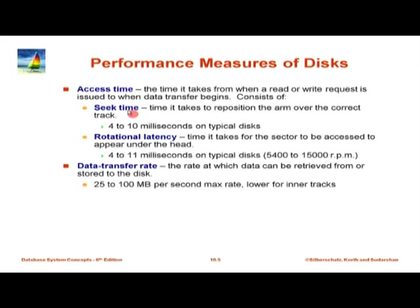Taking the combination of seek time and rotational latency, on typical desktop disks you might get of the order of 10 to 15 milliseconds. On higher-end disks, as low as maybe 5 milliseconds on average. Once you reach the right point, data flows as fast as the rotational speed and storage density allow — typical values these days are 25 to 100 megabytes per second, higher for outer tracks and lower for inner tracks.